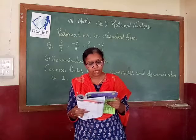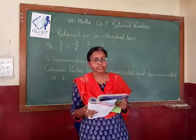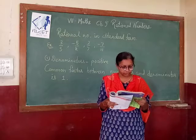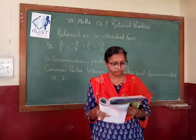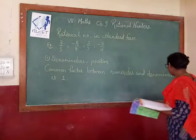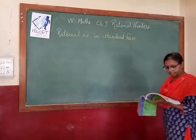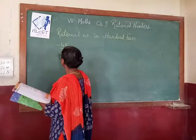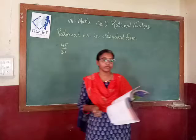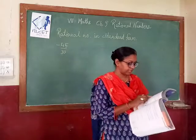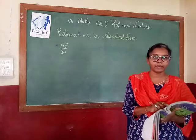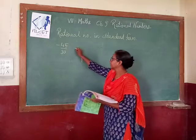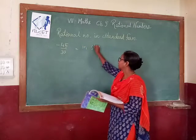If a rational number is not in standard form, we have to reduce it and convert it into standard form. Suppose you are given the rational number -45/30 and you want to write it in standard form.